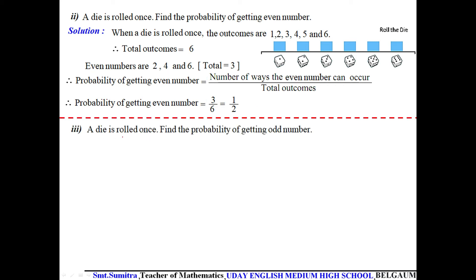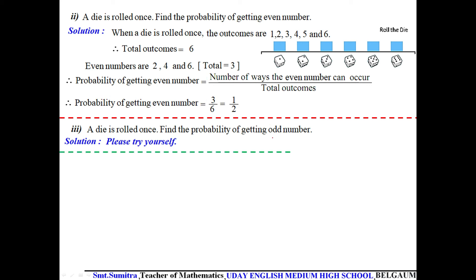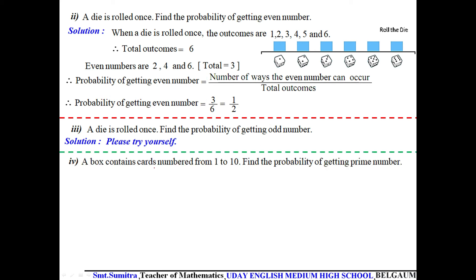Try this yourself: a die is rolled once — find the probability of getting an odd number. We have done even numbers; similarly try odd numbers on your own.